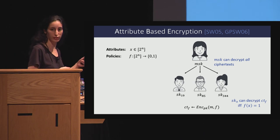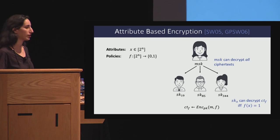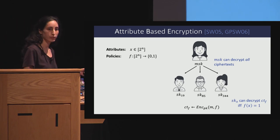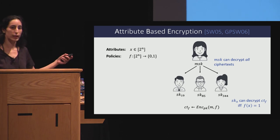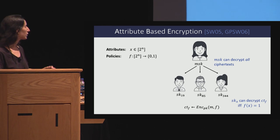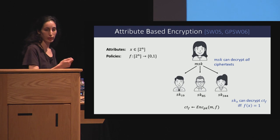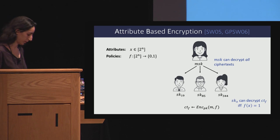Every secret key except the master secret key is identified by some value we call the attribute of the key. This attribute is taken from some exponentially large space, so there can be many keys. When someone wants to encrypt, he runs the encryption algorithm and provides some function f that we call the policy. This policy determines who is allowed to decrypt — it takes attributes as input and outputs either 0 or 1 for each.